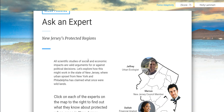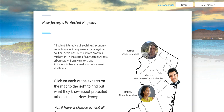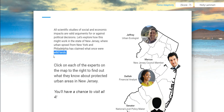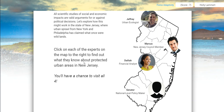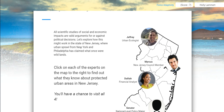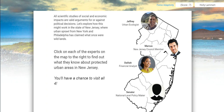National parks are mentioned here as a common example of urban planning. Now we're going to New Jersey to ask an expert — here are New Jersey's protected regions. All scientific studies of social and economic impacts are valid arguments for or against political decisions. Let's explore how this might work in New Jersey, where urban sprawl from New York and Philadelphia has claimed what were once wild lands. This is actually really interesting because New Jersey is one of the first states to have designated wilderness areas. I'm really passionate about wilderness, especially here in Utah — we have a lot of wilderness, and I'm actually paired up with someone from New Jersey to talk to her representatives.